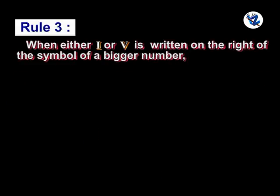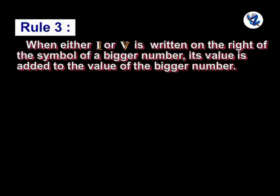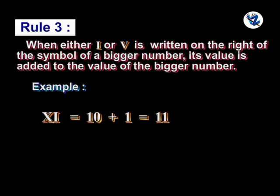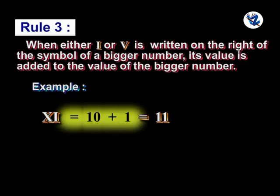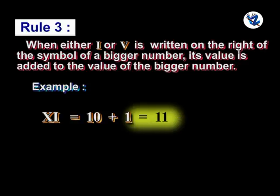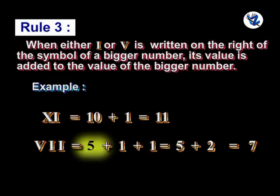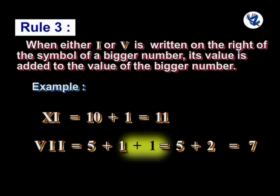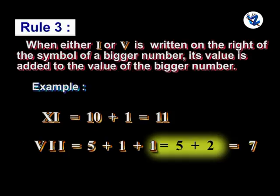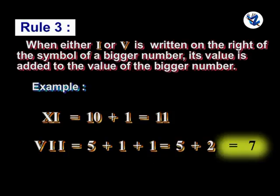Rule 3: When either I or V is written on the right of the symbol of a bigger number, its value is added to the value of the bigger number. For example, XI is equal to 10 plus 1, which is 11. VIII is equal to 5 plus 1 plus 1 plus 1, which equals 5 plus 2, which equals 7 — wait, 5 plus 3 equals 8.